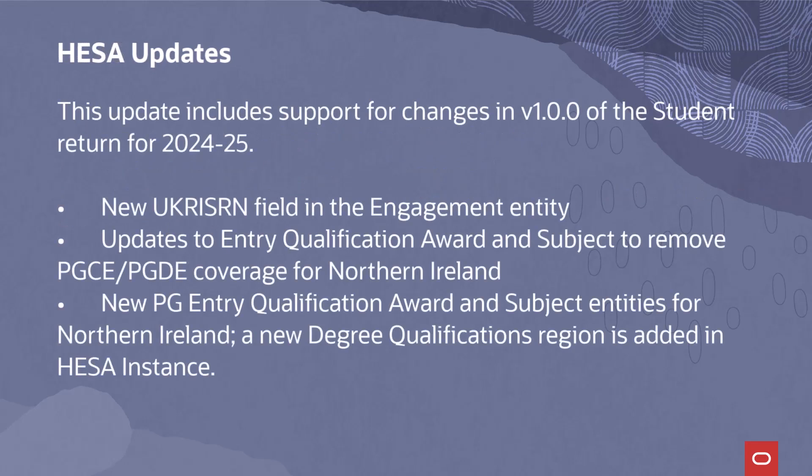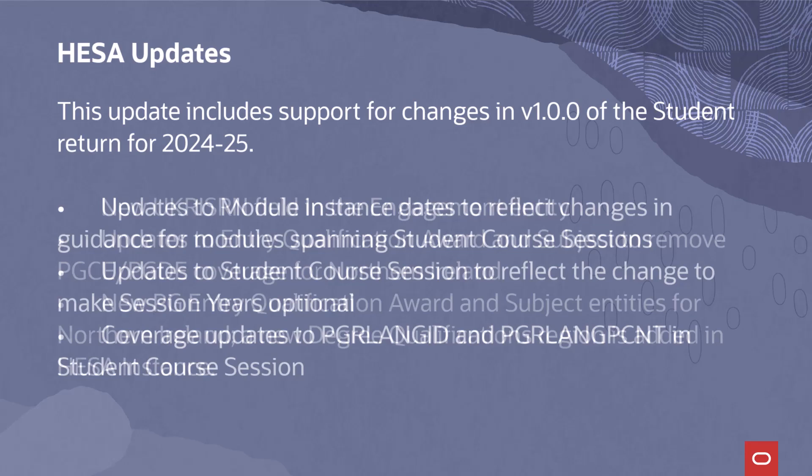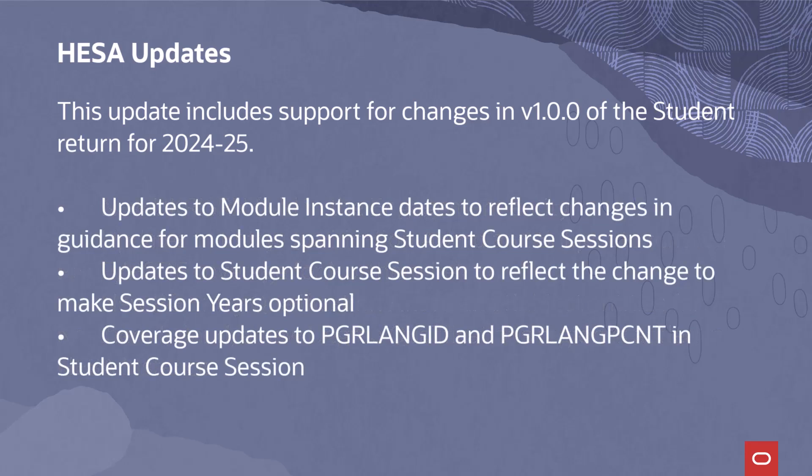HESA updates include support for changes in V1.00 of the student return for 2024-25. There is a new UKRIS RN field in the Engagement Entity. Updates to the Entry Qualification Award and Subject remove PGCE-PGDE coverage for Northern Ireland, and new PG Entry Qualification Award and Subject entities are added for Northern Ireland. A new Degree Qualifications Region is added in HESA Instance. Updates to Module Instance Dates reflect changes in guidance for modules spanning student course sessions. Updates to Student Course Session make session years optional, with coverage updates to PGR Language ID and PGR Language Percent.